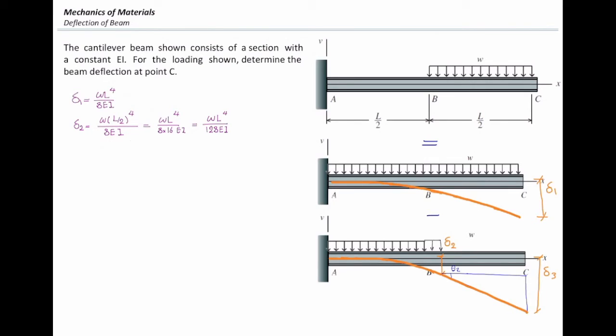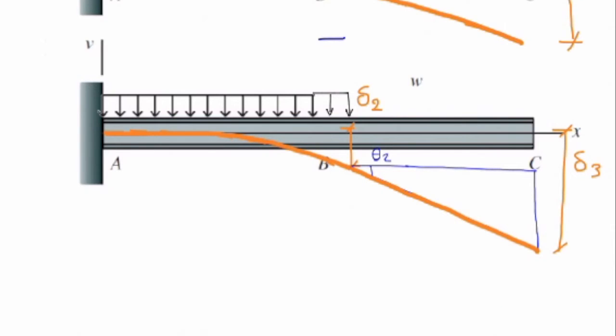So look at this triangle. In that triangle, theta 2 times L2 is that distance, and if I know how much is theta 2, I can determine delta 3 from that. Because delta 3 would be delta 2 plus this red distance that we see here, theta 2 times L over 2. Does that make sense?